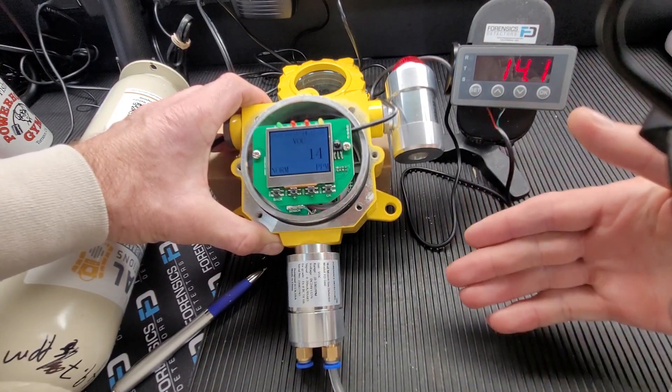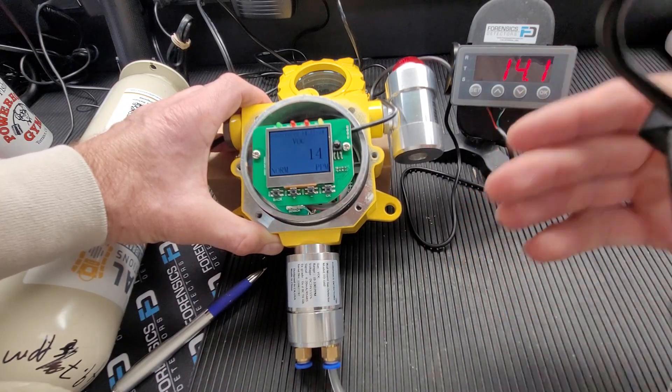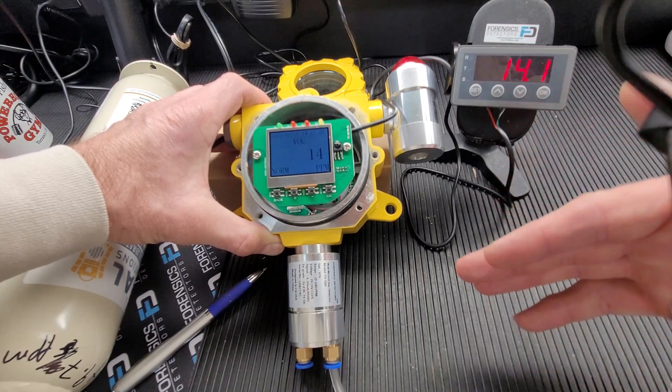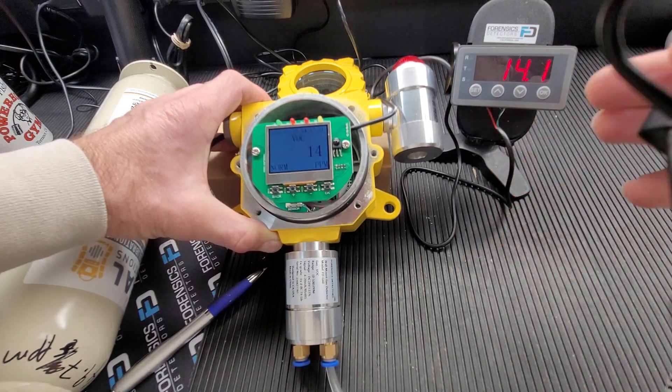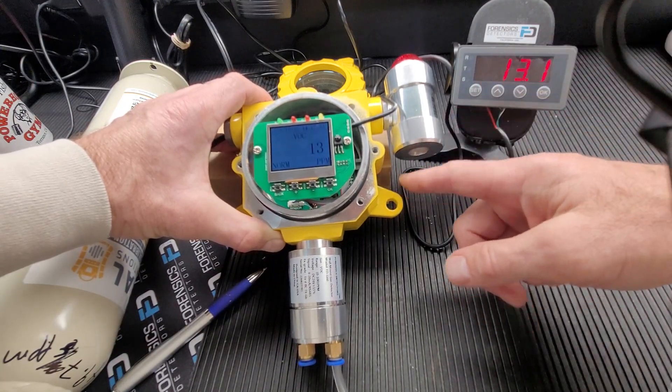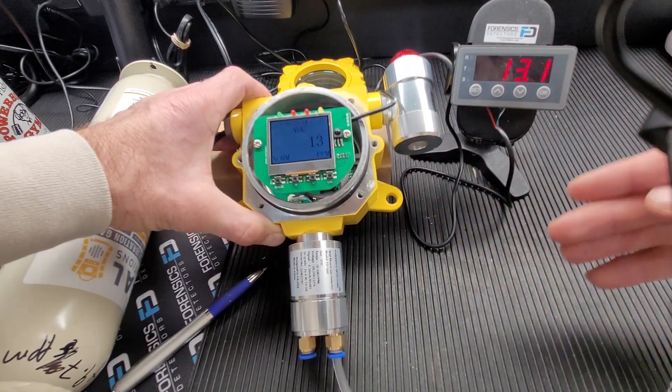So please read up further about how to do that on the web, on Google, 4 to 20 milliamps. This is standard process control stuff. Nothing different, nothing elaborate, nothing we're doing any different from any other people using these type of instrumentation products.